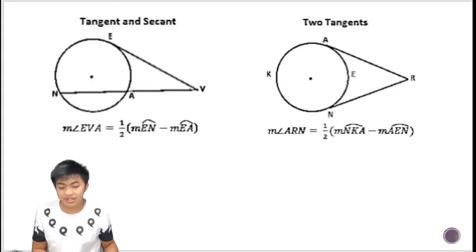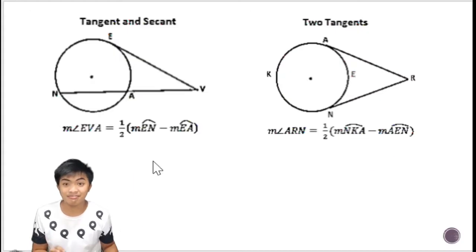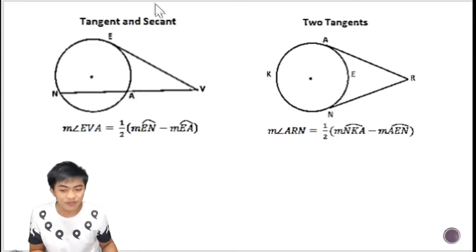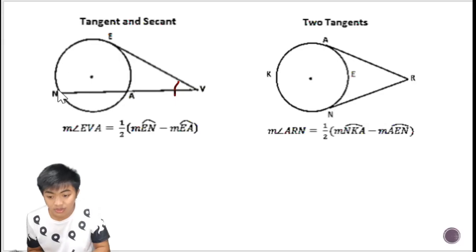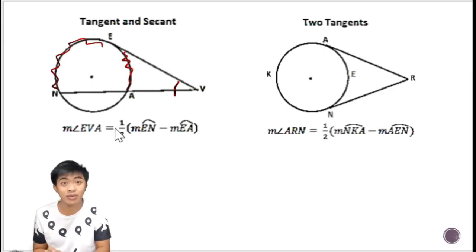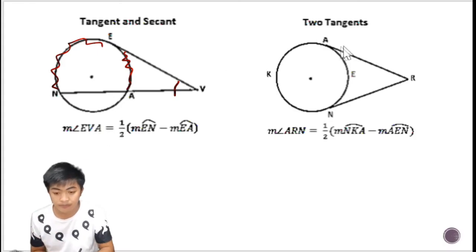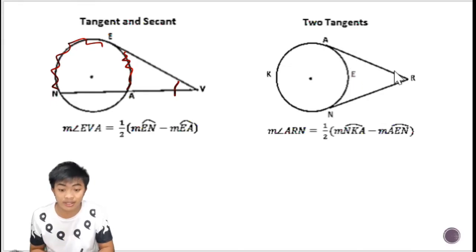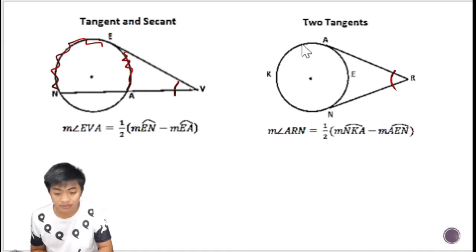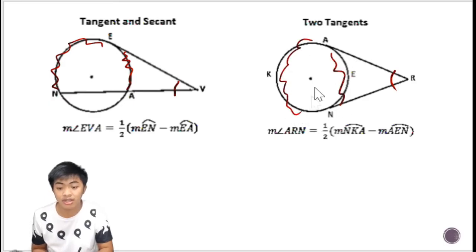This theorem doesn't only apply to secant-secant cases. If we have one tangent and one secant intersecting outside the circle, an angle is formed that intercepts two arcs — one bigger and one smaller — and the same formula applies. It also applies when two tangents intersect outside the circle: again, one bigger arc and one smaller arc, and the solution process is the same.